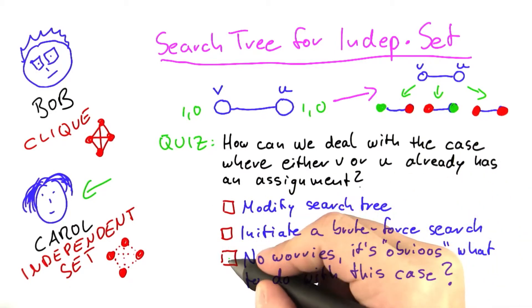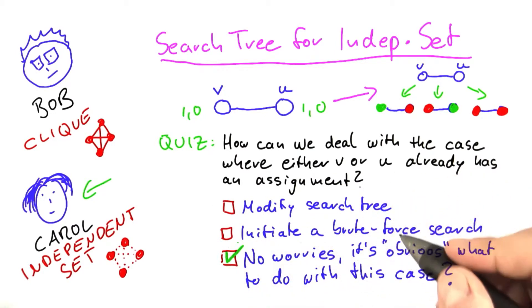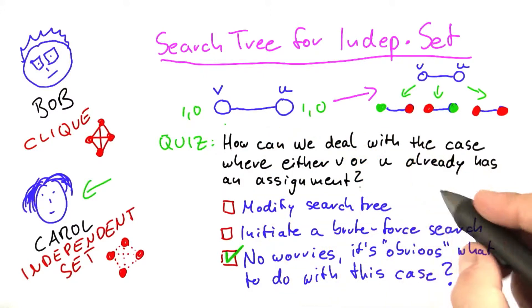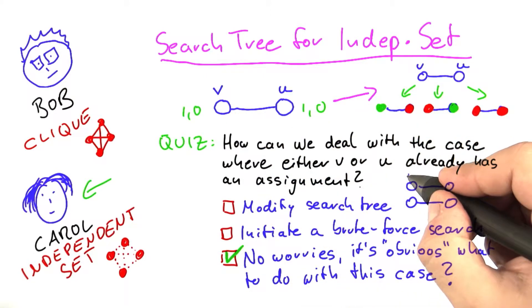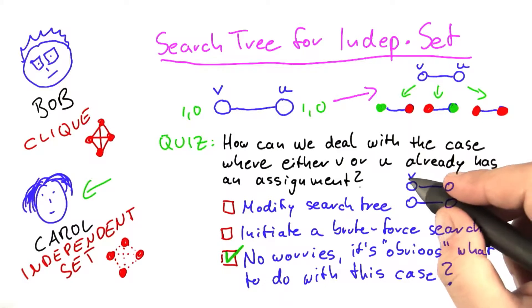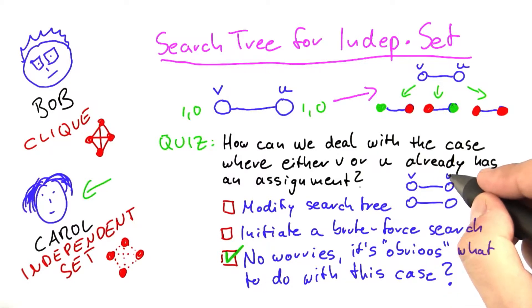The correct answer here is similar to vertex cover. Those cases are actually the easy ones, and I'll show you why. So either V or U already has an assignment, and we can just consider one of those cases. Let's say V already has an assignment here as U.